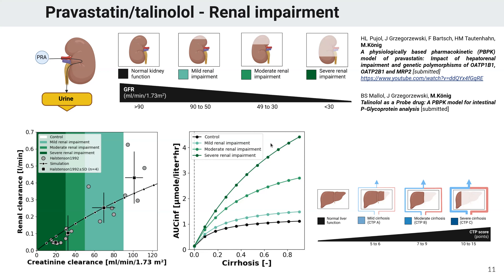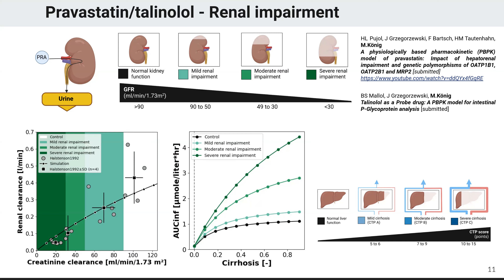We can see we should definitely recommend a dose adjustment here, because in this case if you have impaired liver and kidneys, you have very high plasma pravastatin concentrations under a typical dose of pravastatin.